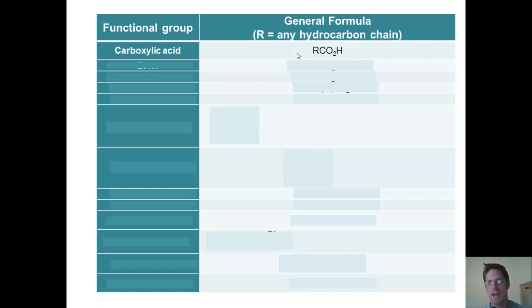One thing I want to point out is that any time you see the letter R used in these structures, R is a generic letter that just means any hydrocarbon chain. It could be a cyclic chain, or it could be a straight chain, or a branch chain. It's just a generic term.